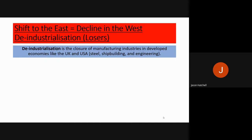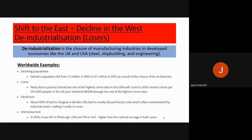The global shift of manufacturing from west to east has caused deindustrialization in the UK, most of Europe, and North America. Deindustrialization is the closure of manufacturing industries like steel, shipbuilding, and engineering. We've seen declining populations and rising crime in areas like Detroit in the US, dereliction in cities like Glasgow, and unemployment in places like Hull, where unemployment has been double the national rate at around nine percent.